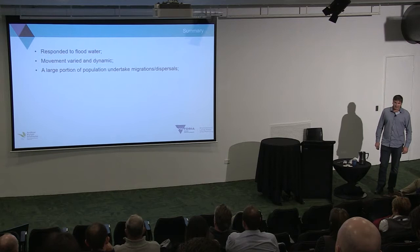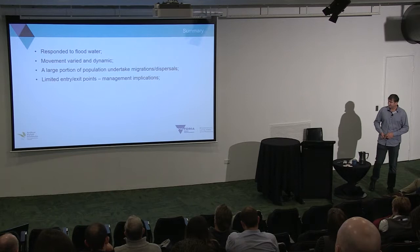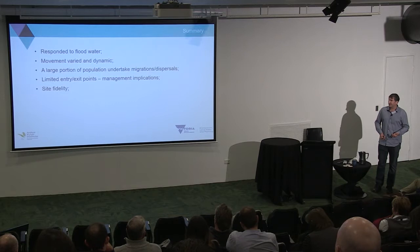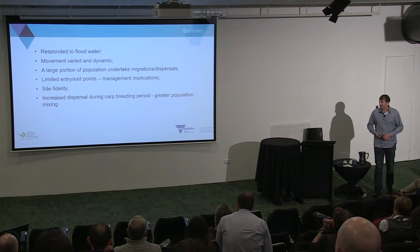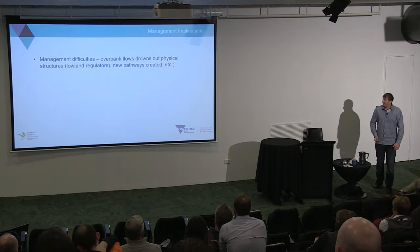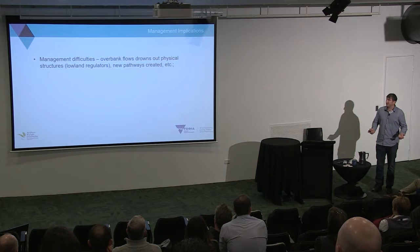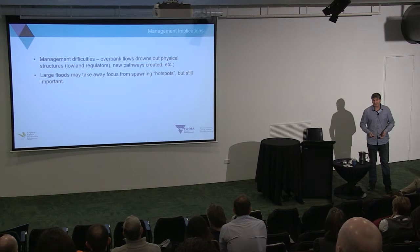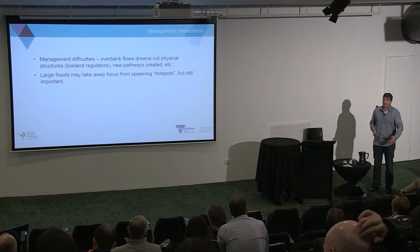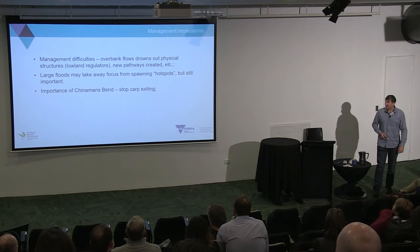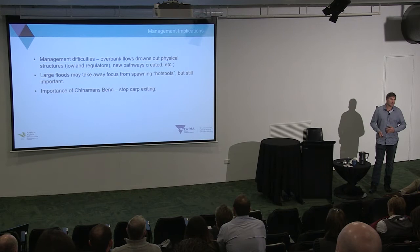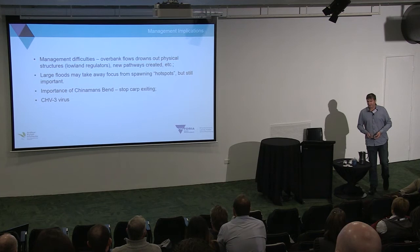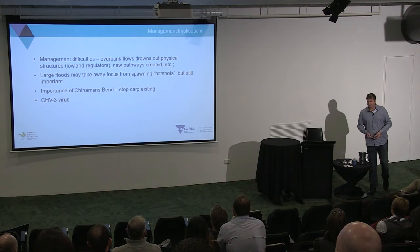In summary, the movement was very dynamic. A large number undertook migrations and dispersals. There are limited entry-exit points with management implications. Fish showed site fidelity, and there was increased dispersal during the carp breeding period — greater population mixing, greater resources available, and they use it all. During natural floods there are overbank flows, structures are drowned out, and there's not a lot we can do. Those large floods may be taking focus away from identified hotspots because carp can breed anywhere — but the hotspots may still be more important during drier times. This study backs up the model suggesting that stopping carp action from Chinaman's Bend may require some sort of management structure at that location. And this work can help inform the landscape spread model or release model for the carp herpesvirus, regarding timing and related factors.